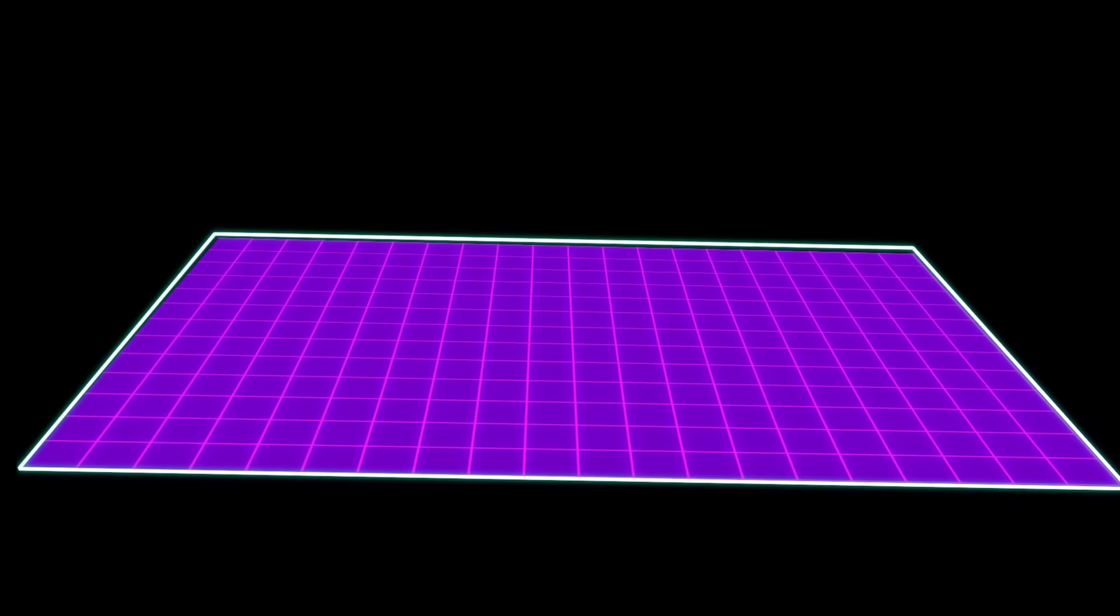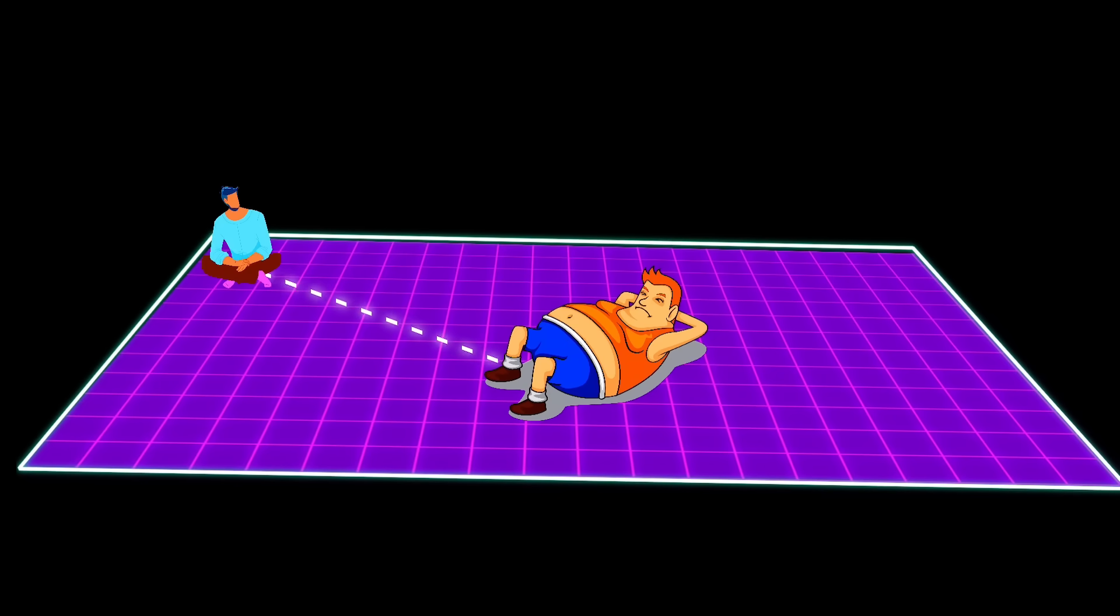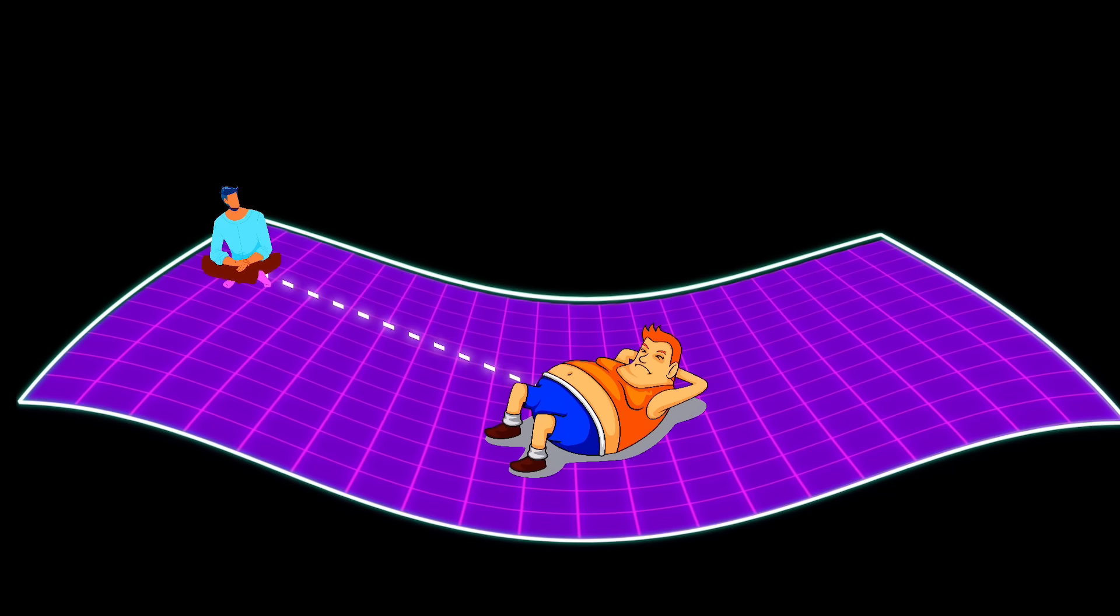Let's take a fabric mat for example, and make a fat man sit in the middle of it, and make a skinny man sit in the edge of the mat. Now we will see that the mat bends inside where the fat man is, so the skinny man is automatically pulled towards the fat man. The fat man does not exert any force, and even if he doesn't touch him, the skinny man is drawn towards him.